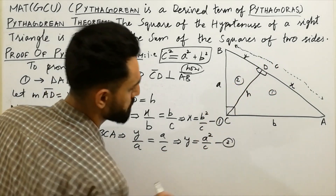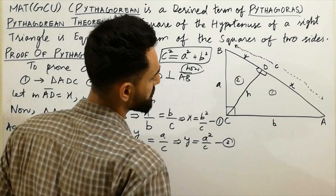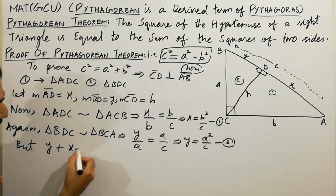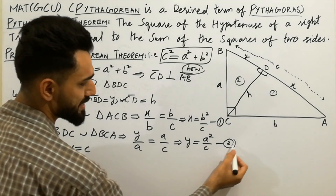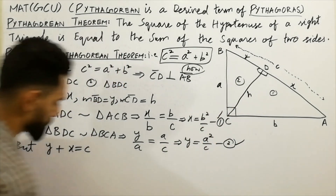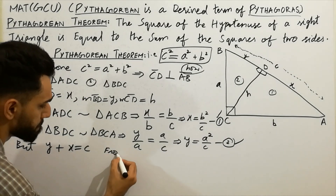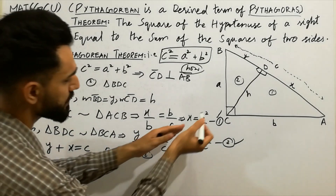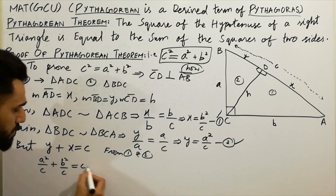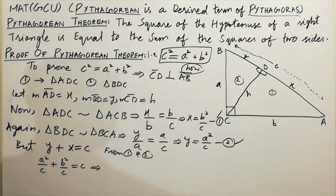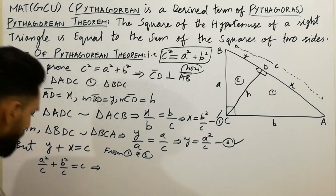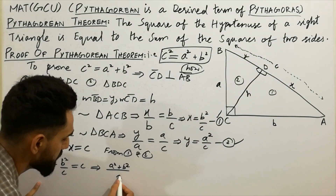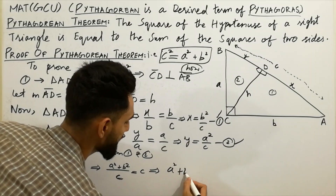Now, y plus x equals c because this is the complete side of c. So substituting from equation one and two: a² / c + b² / c = c. Simplifying, we get a² + b² = c². This is the very easy proof of the Pythagorean theorem. Taking the next step, a² + b² equals c².